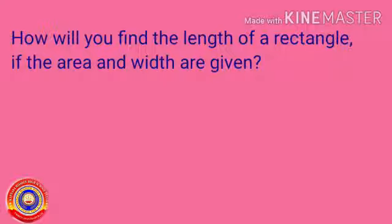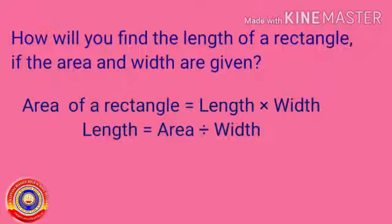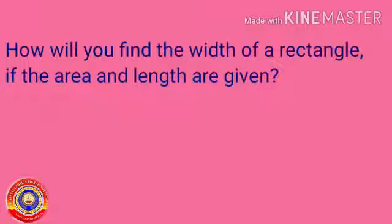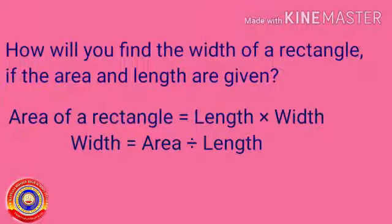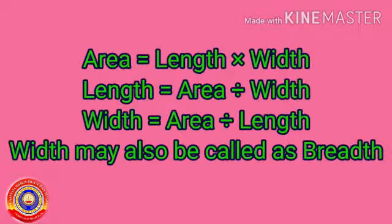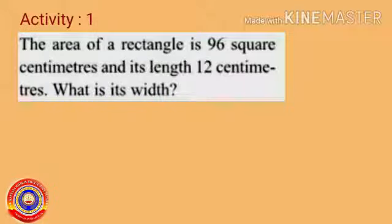Now, how will you find the length of a rectangle if the area and width are given? Area of a rectangle is equal to length into width, so length is equal to area divided by width. And how will you find the width of a rectangle if the area and length are given? Width is equal to area divided by length. Width may also be called as breadth.